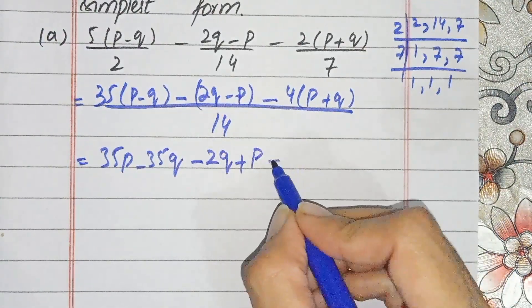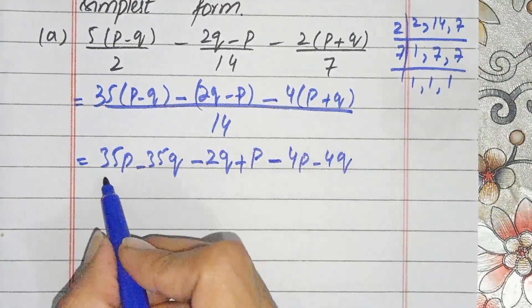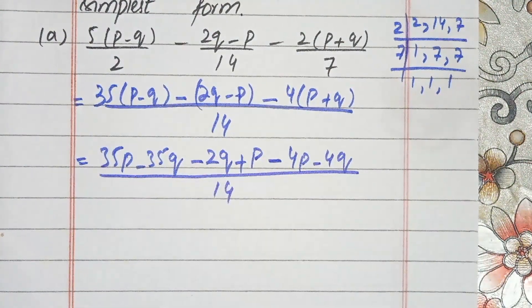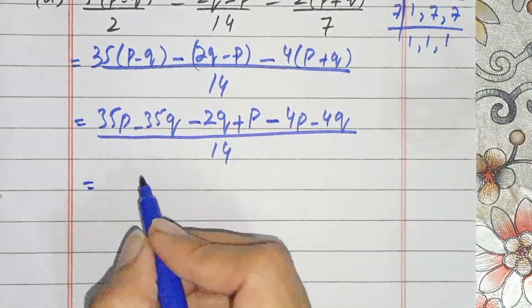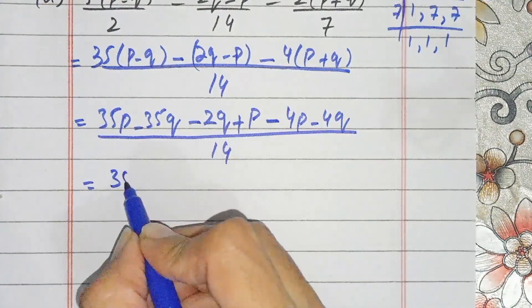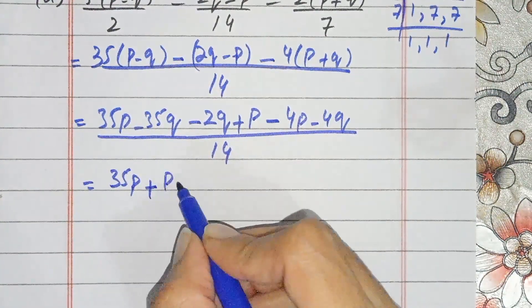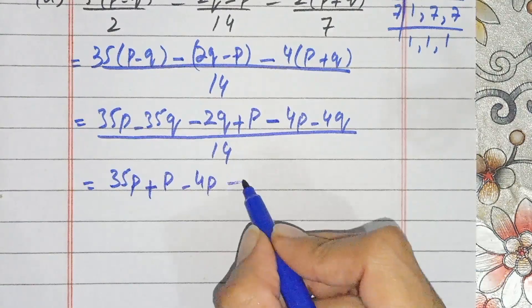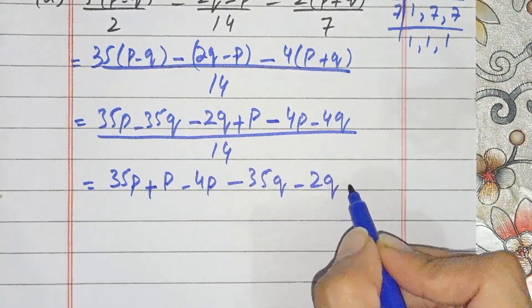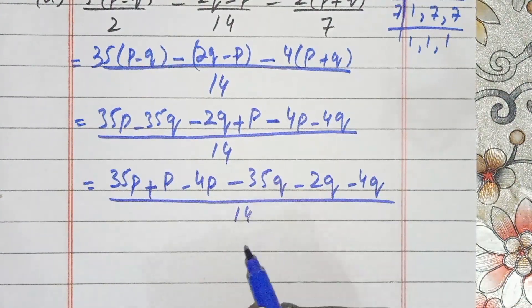We multiply to get minus 4P and minus 4Q, all over 14. Now we collect like terms: 35P plus P minus 4P, and 35Q minus 2Q minus 4Q, over 14.